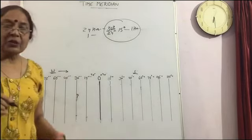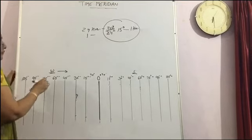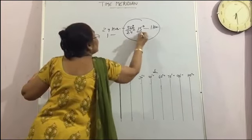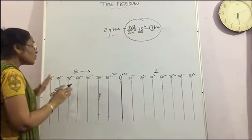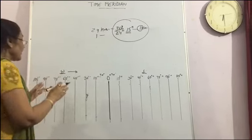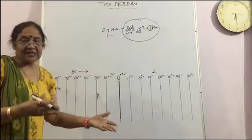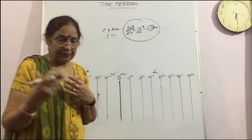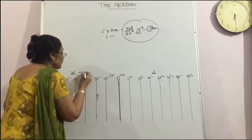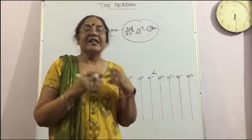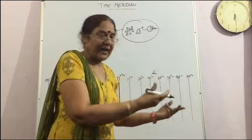So how we are going to calculate? We know that the 15 degree covers in 1 hour. Now first we have to assume that we are going to add the hours or we will subtract the hours. Obviously we will add the hours because we are moving towards the Eastern Hemisphere. And Eastern Hemisphere is ahead.